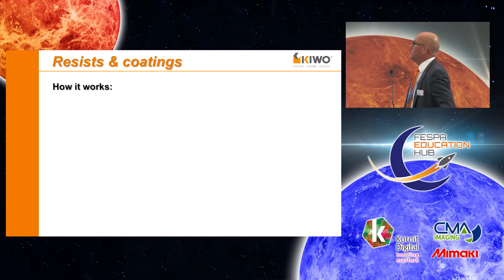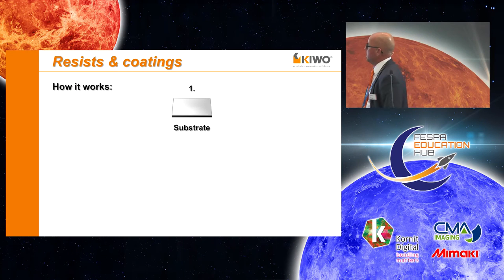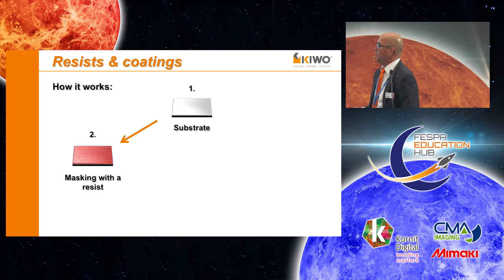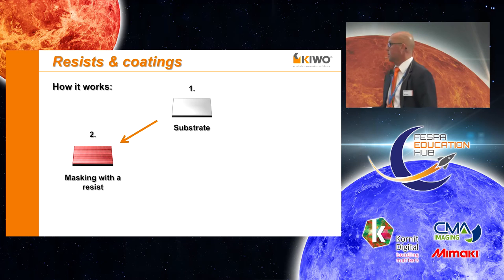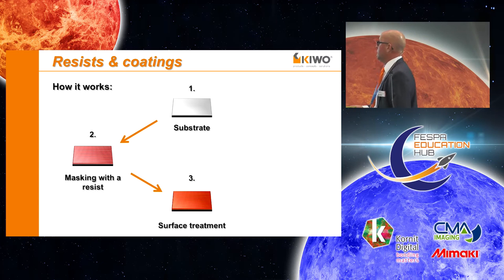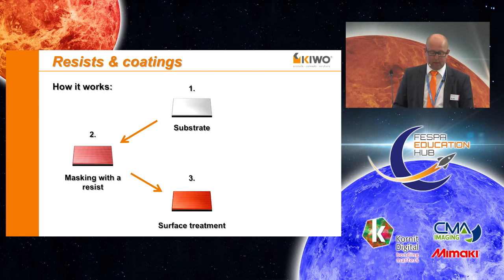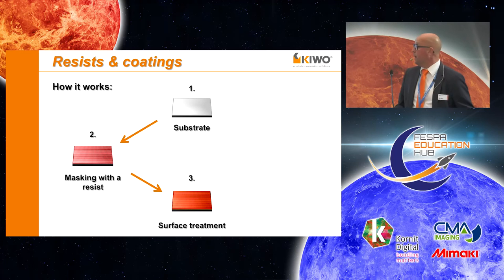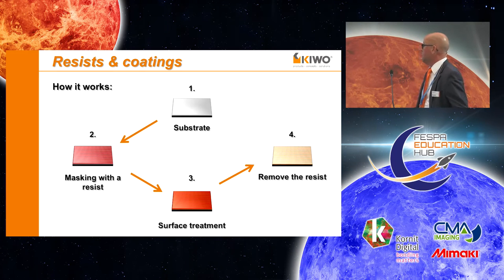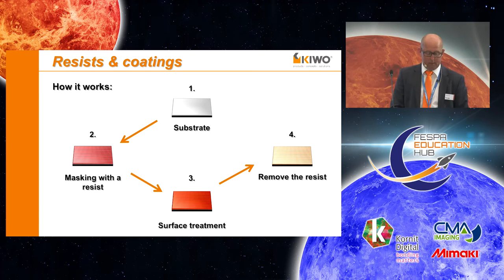How it works: first, you have your uncoated substrate. Then we have to create a mask with a resist. Then the surface treatment can be sandblasting, etching, brushing, or spatter coating. Then we have to remove the resist, either by peeling or with special chemicals.